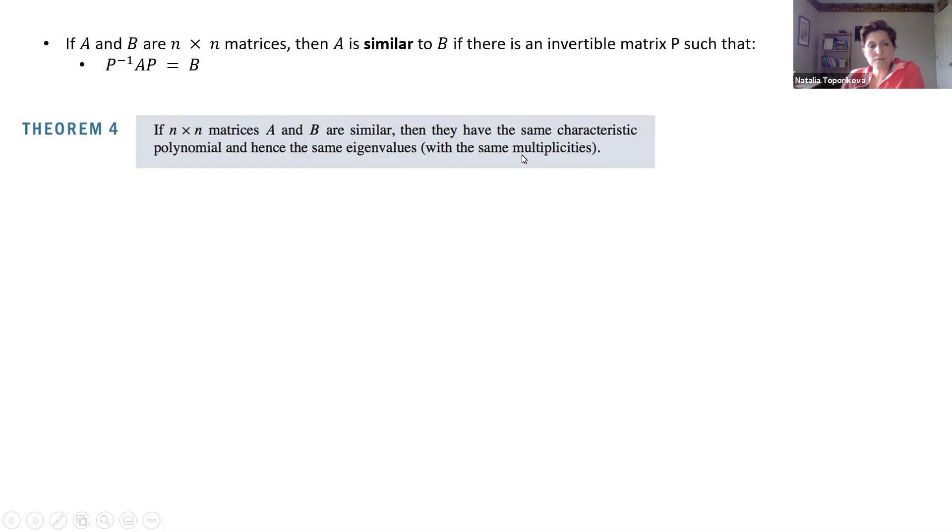But this similarity provides a very important result for the characteristic equations. Because if two matrices A and B are similar, and we use that property of similarity, then they have exactly the same characteristic equation and exactly the same eigenvalues. And that property is really important, so important that I decide to go ahead and actually work through the proof. And you also have several similar proofs in the assignment.